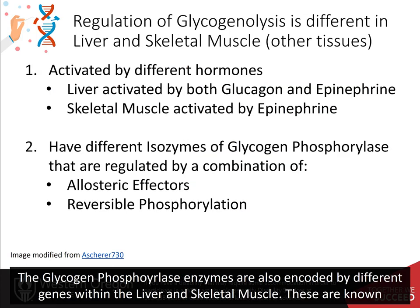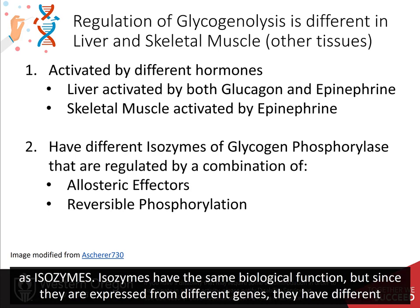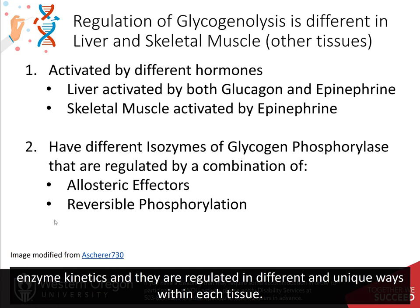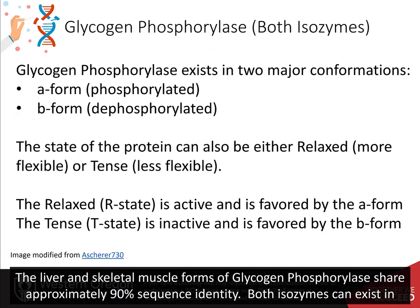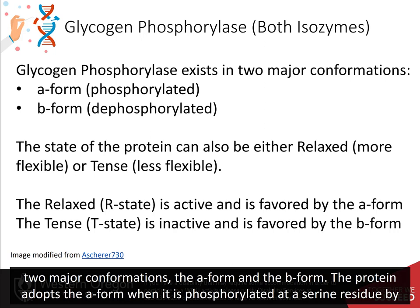The glycogen phosphorylase enzymes are also encoded by different genes within the liver and skeletal muscles. These are known as isozymes. Isozymes have the same biological function, but since they are expressed from different genes, they have different enzyme kinetics and are regulated in different and unique ways within each tissue. The liver and skeletal muscle forms of glycogen phosphorylase share approximately 90% sequence identity. Both isozymes can exist in two major conformations, the A form and the B form. The protein adopts the A form when it is phosphorylated at a serine residue by phosphorylase kinase.